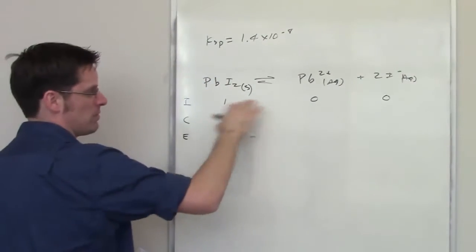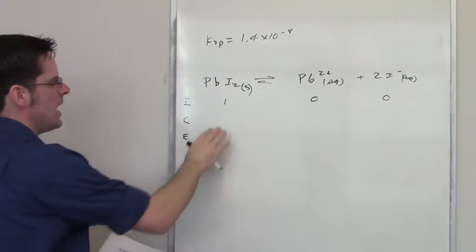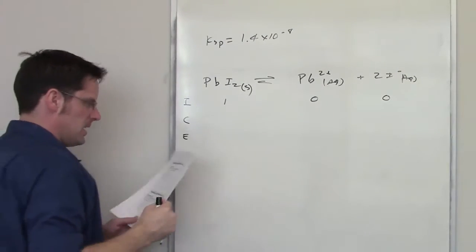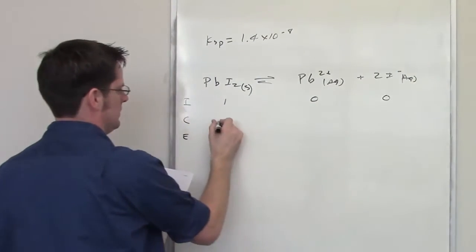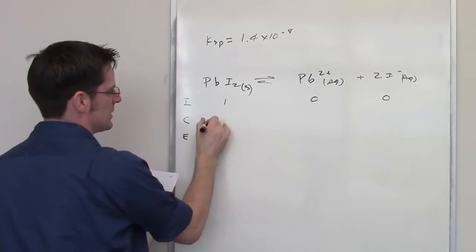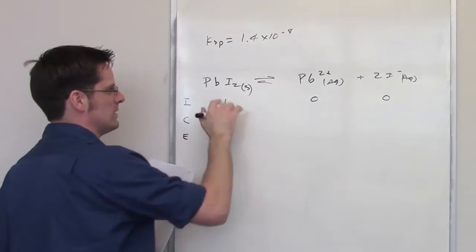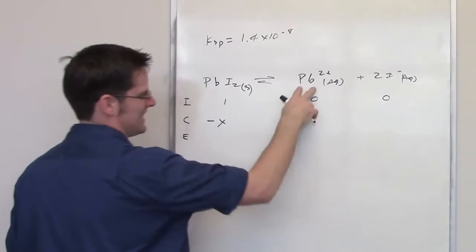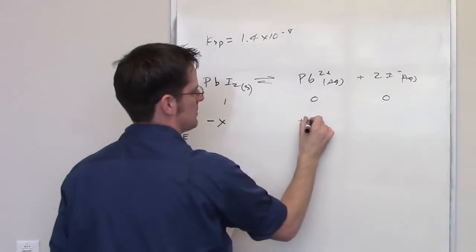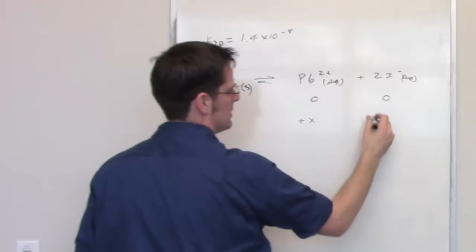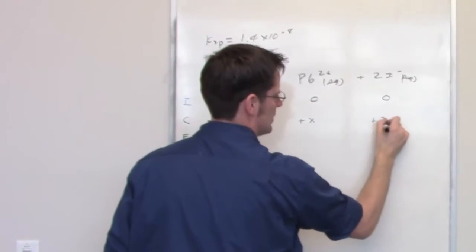Now gradually that's going to go back and forth until it hits equilibrium, and it's going to change by some amount. That amount by which this decreases is going to be negative x, and then molar equivalents, because this is 1 to 1 to 2, it's going to increase the concentration of lead 2+ by plus x, and the amount of iodide by plus 2x.